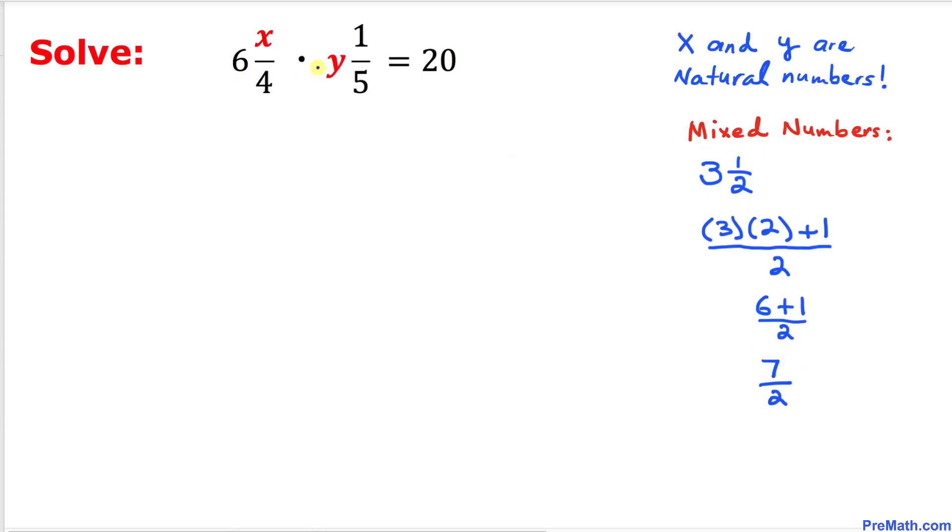And now we are going to apply the same analogy to take care of these two mixed numbers. Let's take care of this first mixed number. We are going to multiply 4 times 6, and then we are going to add x to it. So 6 times 4 is 24, then plus x, divided by 4.